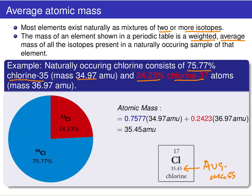Looking at this pie chart, all that we're saying with these percent abundances is that if you take a hundred different chlorine atoms — or Avogadro's number of chlorine atoms in a sample — and you were able to separate them into the different isotopes, then you would find that 75.77% of all those chlorine atoms are chlorine-35, and 24.23% are chlorine-37.